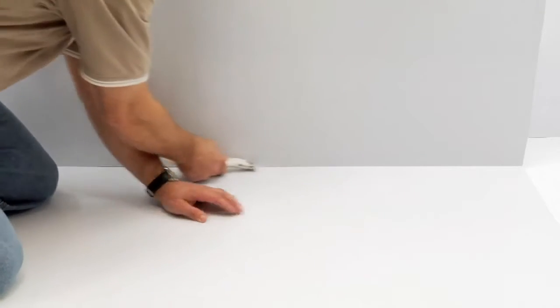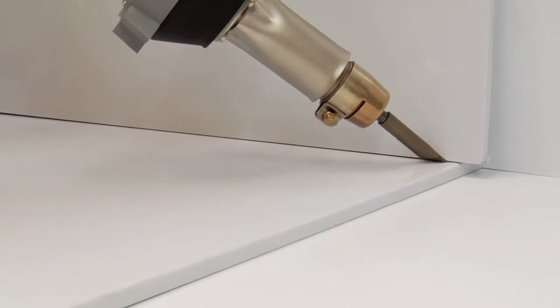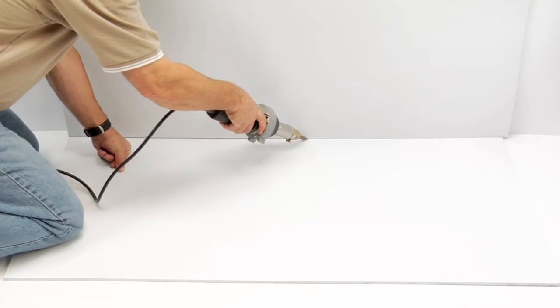Before welding, prep your material using a scraper and wipe away any excess. To hold the material in place, you might want to tack it together first using a Quick-L or other hot air tool.